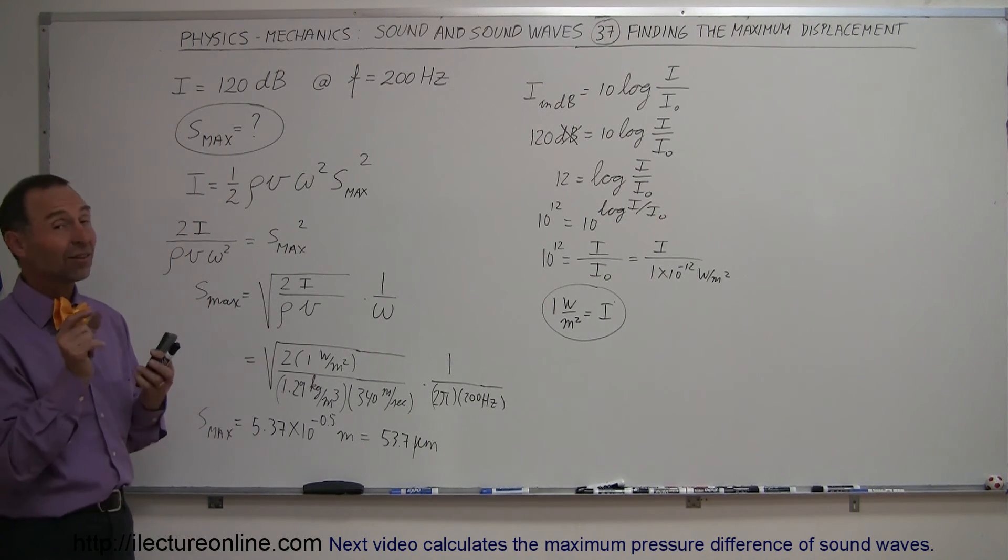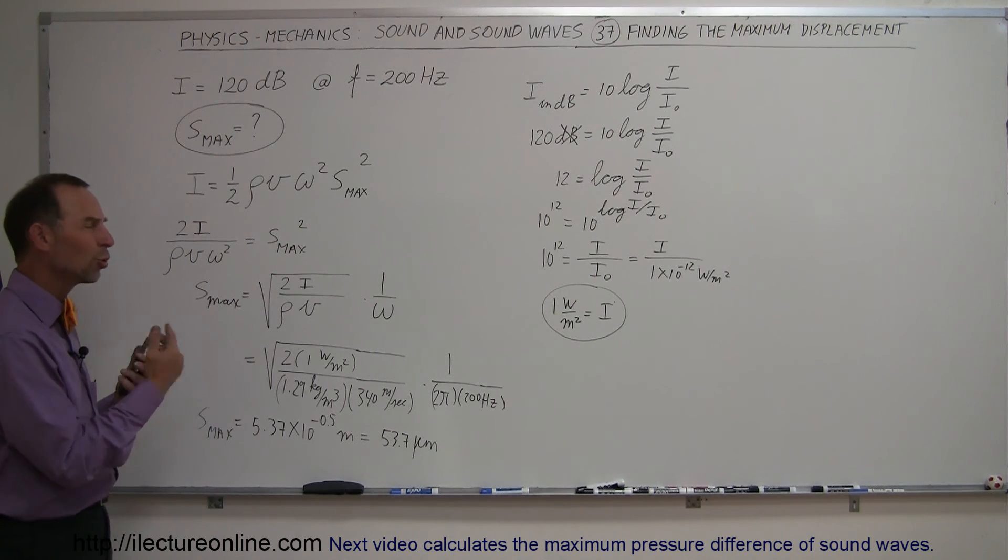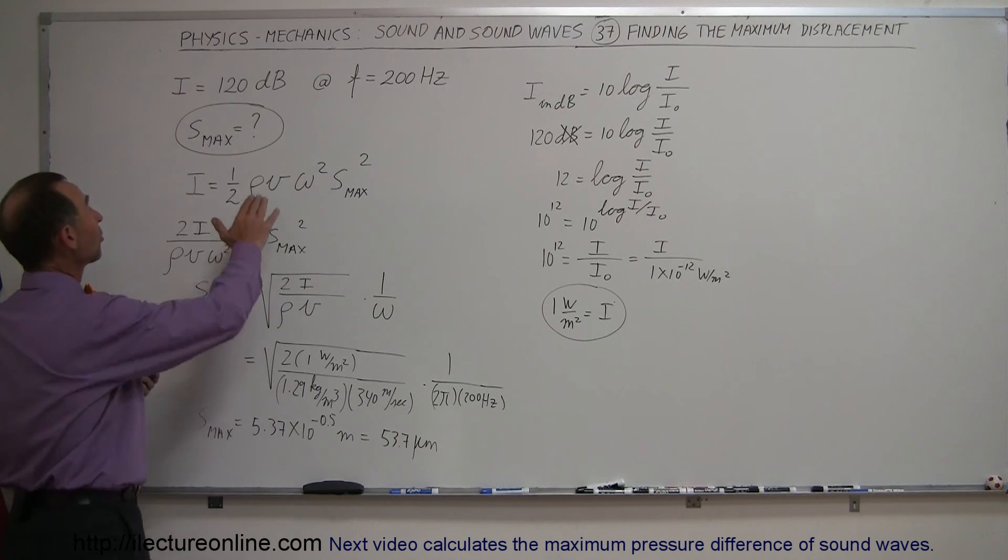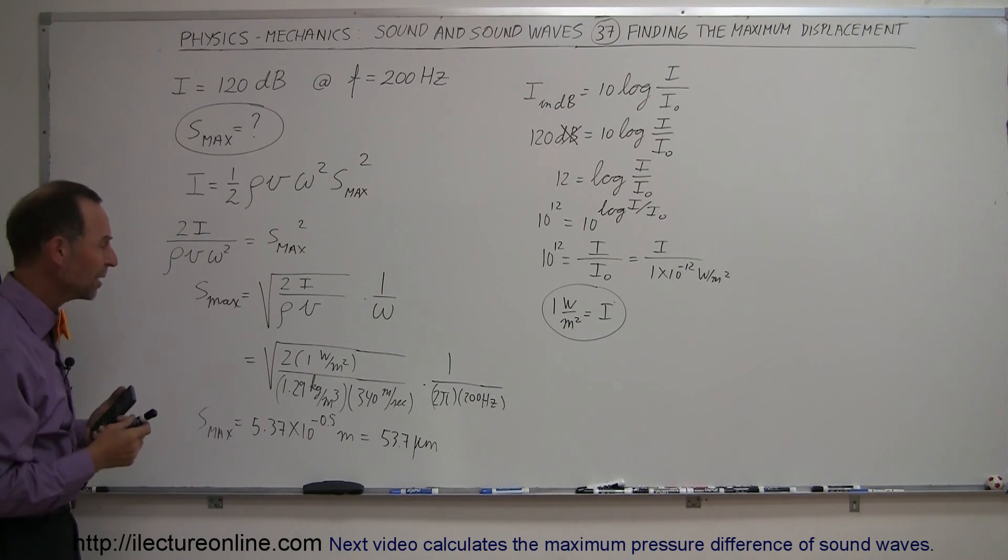53.7 micrometers, that's a displacement that's like a thousand or more times a displacement you hear from normal sounds, and that's because we're talking about a very loud sound, 120 decibels or 1 watt per square meter.